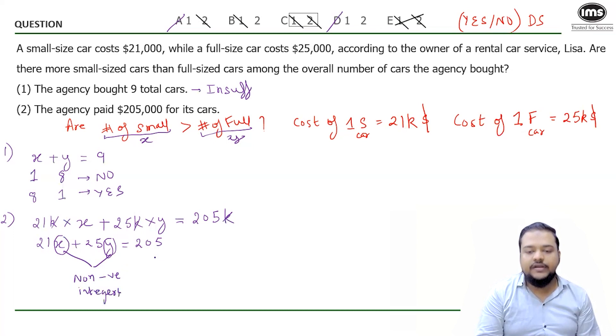Non-negative integers are nothing but zero and positive integers. And what are non-negative integers? Non-negative integers are nothing but zero and positive. Because number of cars they bought might be zero or might be a positive integer for the individual category.